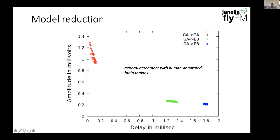As such, we could potentially reduce the model to show the delay response per brain region rather than modeling every single node in the skeleton graph. This shows a given neuron with inputs in the GA sending outputs to three different regions — the GA, the EB, and the PB. The output response delay and amplitude has three distinct clusters for three different regions they go to, and within each region there's a very tight grouping of delays, which justifies the grouping approach. There'll be more details in a paper coming out shortly.